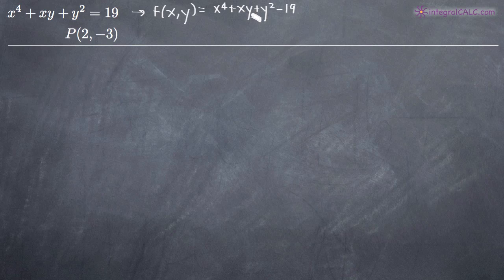Then we'll evaluate the gradient vector at the point p, 2, negative 3 and that'll give us the vector that is normal to the curve at the point p. Then we're going to use that vector as well as the point p to find the equation of the tangent plane.